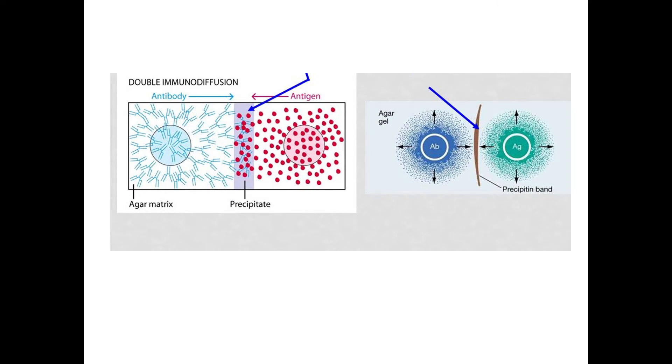This slide shows the double immunodiffusion. When you place the antigen and antibody in separate wells, they move or diffuse into the gel, and when they reach optimal concentration, they form the precipitin line or band.